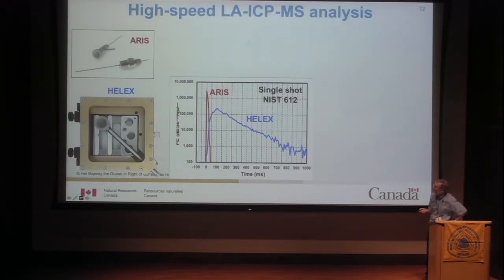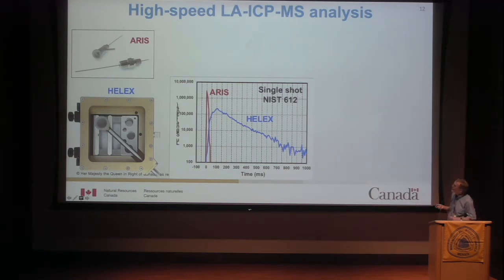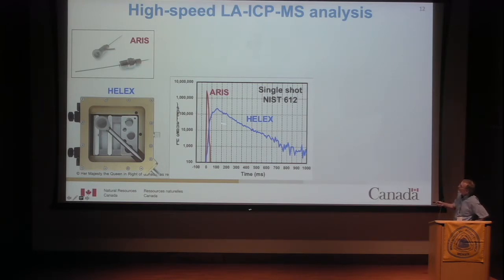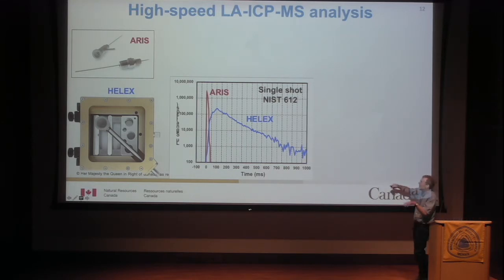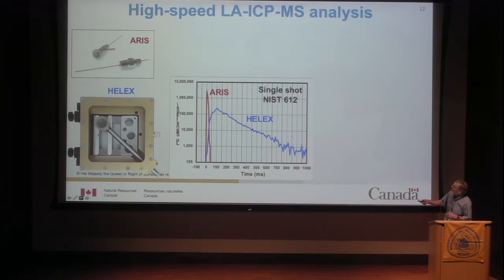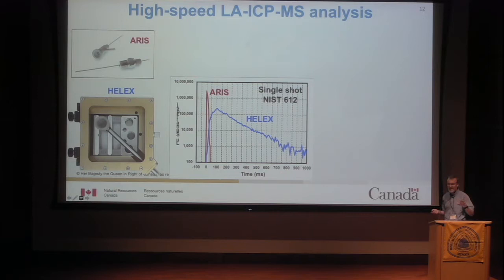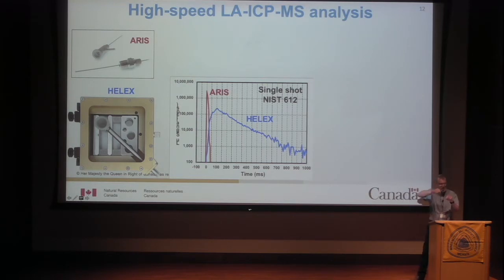Where I think the technique is really going is in speed. The big drive now seems to be to speed up this whole technology. A typical laser ablation cell signal from a single laser shot decays over about a second — so firing at 10 shots per second gives a roughly steady-state signal, ideal for slow sequential mass spectrometers. But recently, new sample introduction devices have been developed that flush cells in a matter of tens of milliseconds, which means you can now fire a laser at 50 shots per second and resolve every single peak.